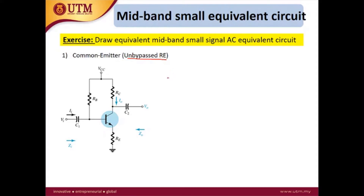One way to draw the mid-band equivalent circuit is by starting from the input side. VI is the input; you arrive at the capacitor, which becomes a short circuit. Then you arrive at the node connected to the base and to RB. The other terminal of RB is connected to VCC, which becomes ground, so RB is connected to ground.